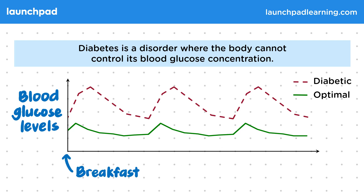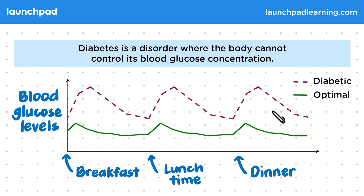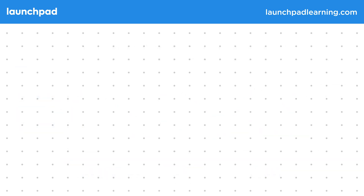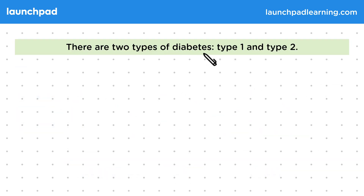This graph shows how blood glucose levels peak after meal times — here is breakfast, this is around lunchtime, and these peaks show dinner. You can see how the blood glucose levels of somebody who is diabetic peak much higher above the optimal levels. This can be bad as high glucose levels can actually damage blood vessels and other tissues.